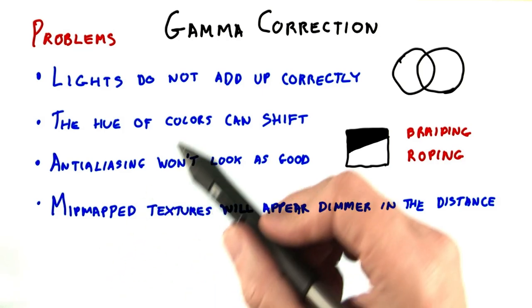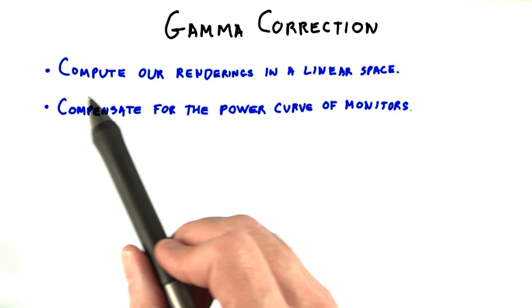The solution to these problems is called gamma correction. We have two separate wishes. We want to compute our renderings in a linear space, and we want to compensate for the power curve of monitors when we're displaying.